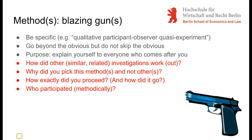Questions to cover in this section include: how did you arrive at your method — hopefully not just randomly or out of convenience; why exactly did you pick this method or set of methods; how exactly did you proceed; and did the method work out? This section also requires you to say who contributed to your effort and participated in it. Research participants include survey subjects, case study companies, and so on.